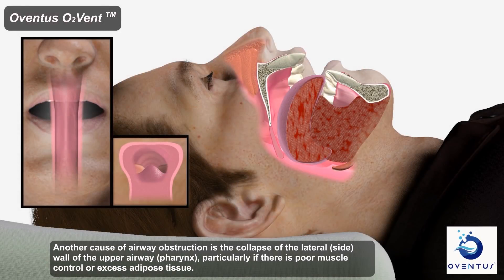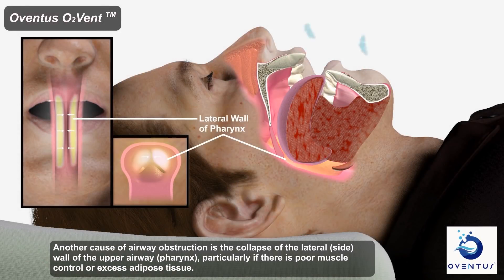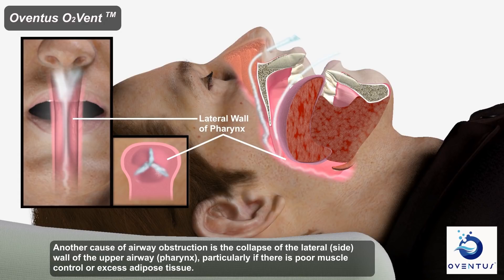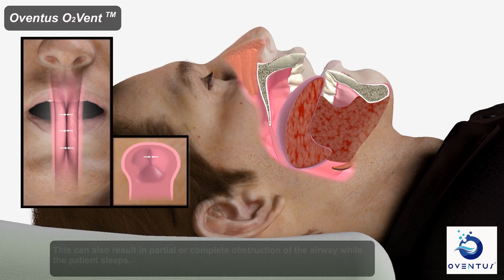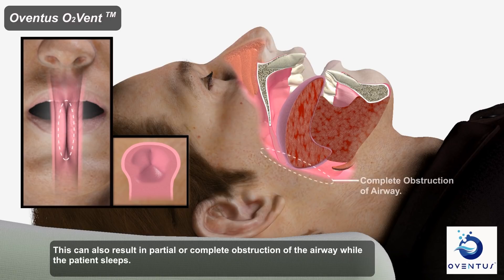Another cause of airway obstruction is the collapse of the lateral, or side, wall of the upper airway, or pharynx, particularly if there is poor muscle control or excess adipose tissue. This can result in partial or complete obstruction of the airway while the patient sleeps.